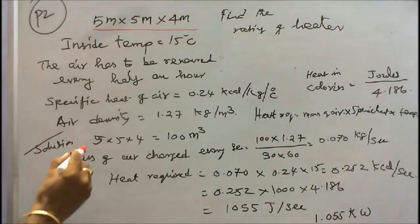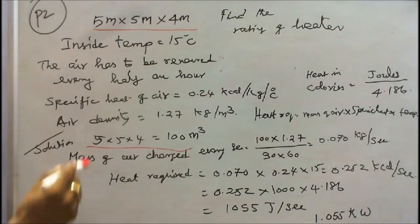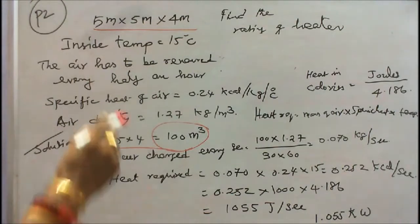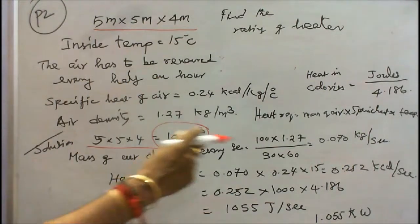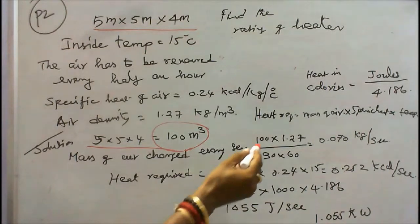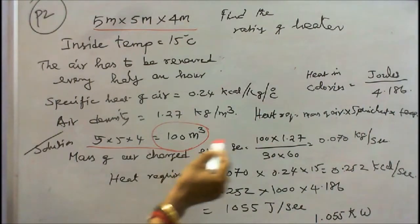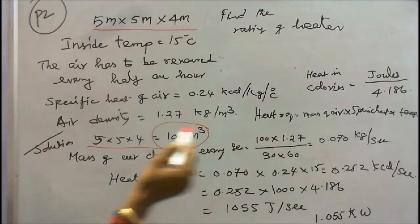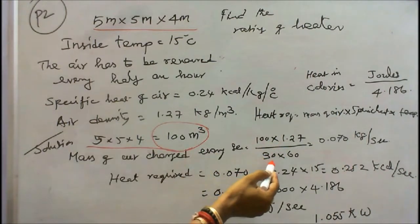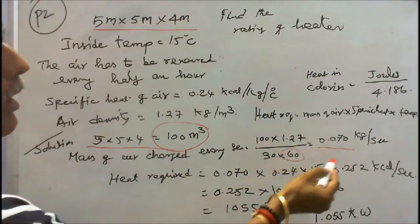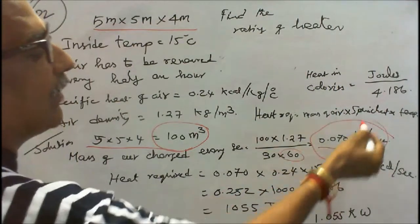So first we have to find the volume of the room: 5 into 5 into 4 equals 100 meter cube. Mass of air changed every second - it is given half an hour so we convert to seconds. This is 100 into 1.27 (air density) divided by 30 into 60 (seconds), we will get 0.070 kg per second.